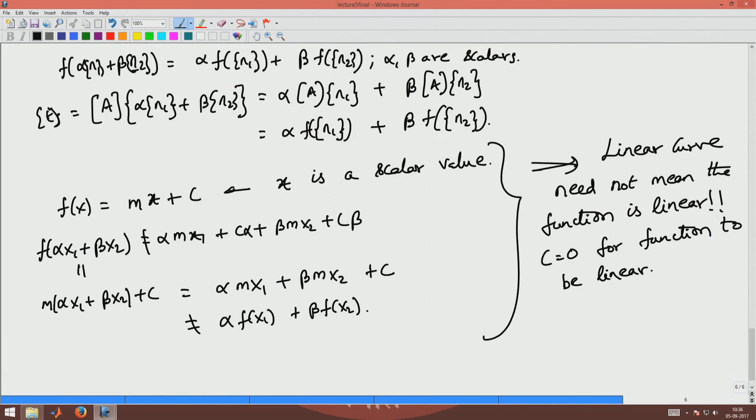Thus for the vector mapping of 3 variable functions to 3 functions, you will find that what we have, this vector t mapped as A times n, to be the most general linear function.